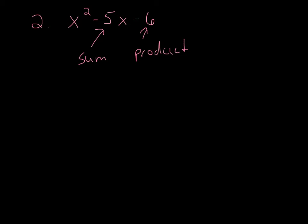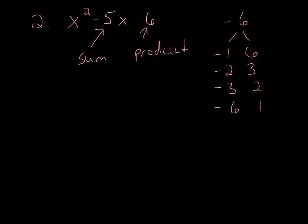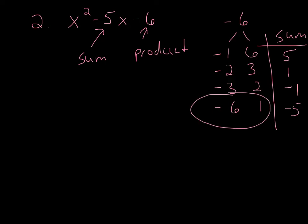Let's look at all the factors of negative 6. My factor pairs would be: negative 1 and 6, negative 2 and 3, negative 3 and 2, and negative 6 and 1. Notice I have to have one negative and one positive. Since the middle term is negative, the larger of the two numbers has to be negative. Looking at the sums: those give 5, 1, −1, and −5. The one I need is −5, so that's negative 6 and positive 1. So I can write this as (x − 6)(x + 1).